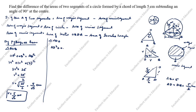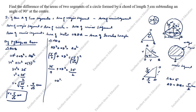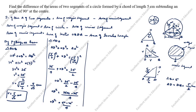In triangle ADO: AD² + OD² = AO². So (5/2)² + OD² = (5/root 2)². That gives 25/4 + OD² = 25/2. Therefore OD² = 25/2 − 25/4 = (50 − 25)/4 = 25/4. So OD = root of 25/4 = 5/2 centimeter. OD equals 5 by 2 centimeter.